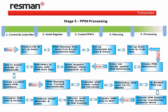Finally, Stage 5 is the PPM processing stage where we transfer work from our PPM planning year directly into work in progress and we print dockets or transfer onto PDAs. We then process work and feed back job details in the normal way through to completion and transfer completed work into history. This ends the PPM overview of ResMan PPMs.